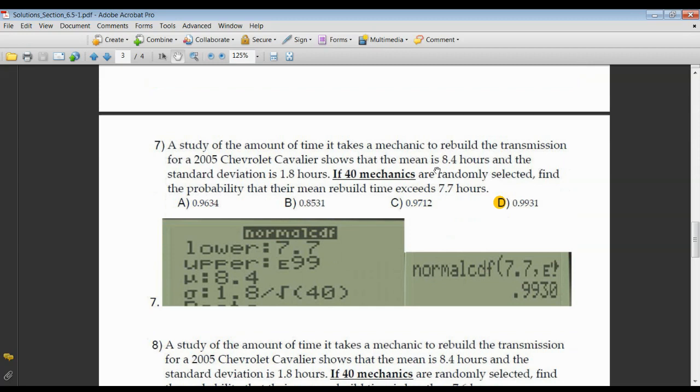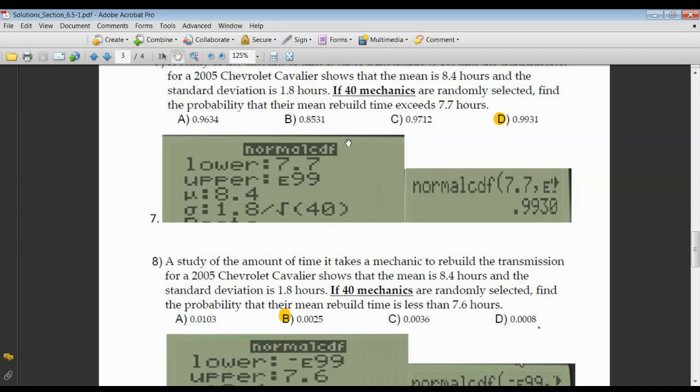Same Chevy Cavalier, same 40 mechanics. We're asked to find the probability that the rebuild time, the mean average rebuild time for these 40 mechanics exceeds 7.7 hours. Low 7.7, exceeds means we're getting larger. Larger all the way to E99. There's the mean given to us as 8.4 for one mechanic. But we're talking about 40, so standard deviation decreases. It's the original standard deviation of 1.8 divided by n, and in this case it's 40. 0.9930, correct answer 0.9931.